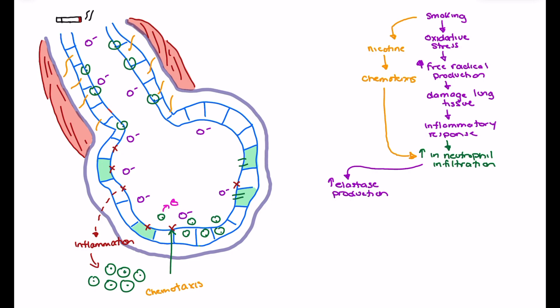We draw in our elastase here — as we have an increase in neutrophils we have an increase in elastase, the enzyme that breaks down elastin. We see targeted destruction of elastin as a result of this elastase infiltration, and we have elastin living in both our alveoli and our respiratory bronchioles. The breakdown of elastin causes two primary problems for these patients.